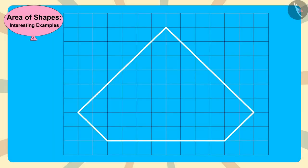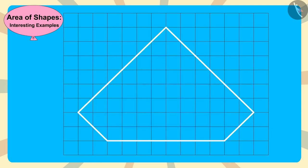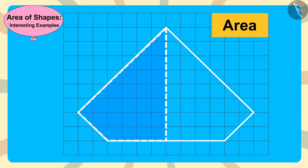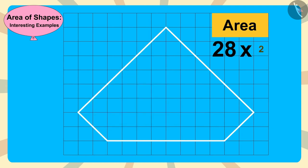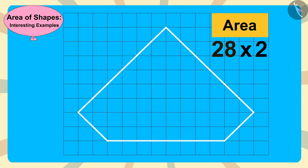Now, because the diamond is made of two equal parts, she multiplied the area of this part, 28, by 2. The area of this diamond is 28 times 2, which is 56 square centimeters.